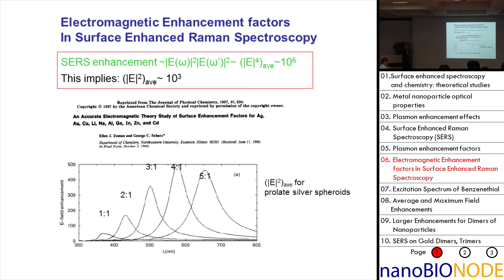If you think of E⁴ as being 10⁶, then E² would be sort of like 10³. So this number suggested that indeed these electromagnetic enhancement factors were the dominant player in what was going on.